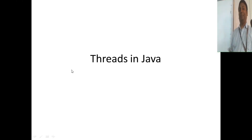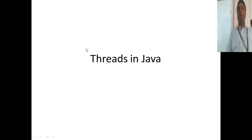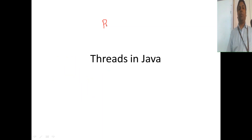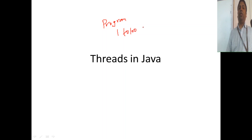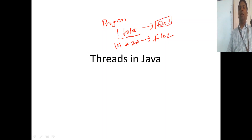Before starting with threads, here is an assignment. Write a Java program that writes all integer values from 1 to 100 to a file called file1, and integers from 101 to 200 to a file called file2. The integer values will be converted to characters and stored in each respective text file.